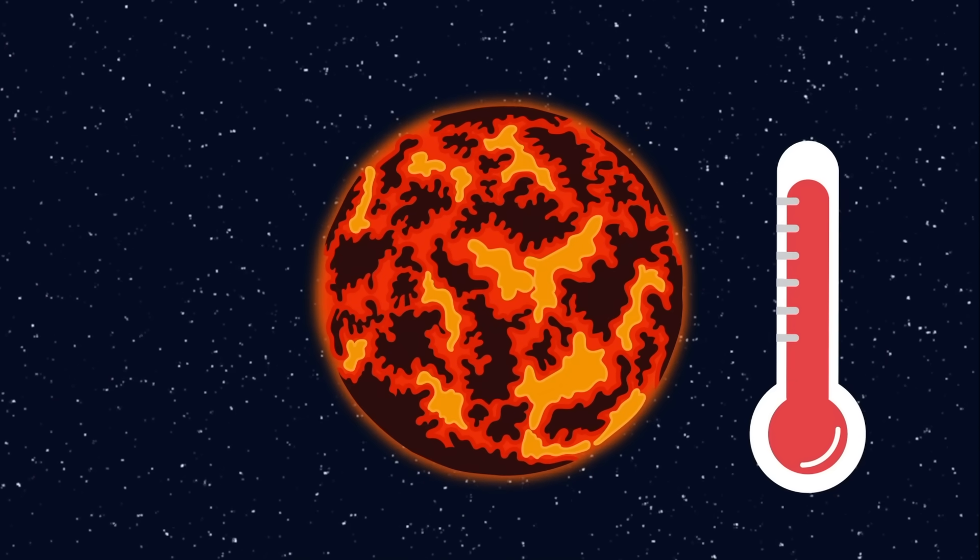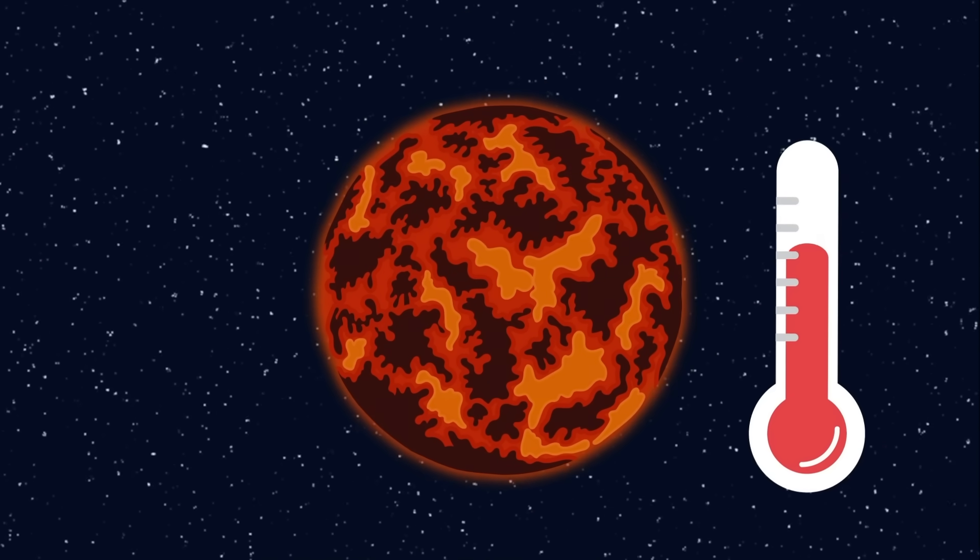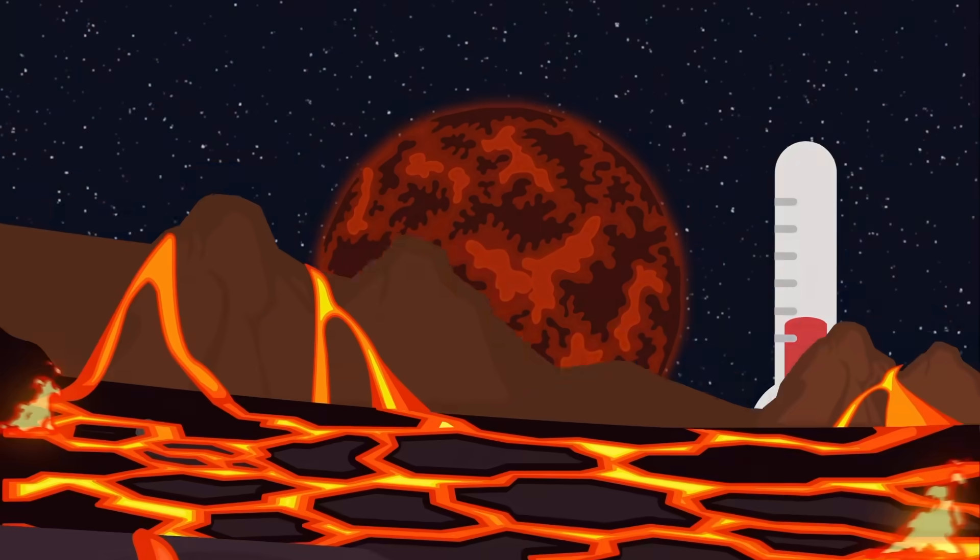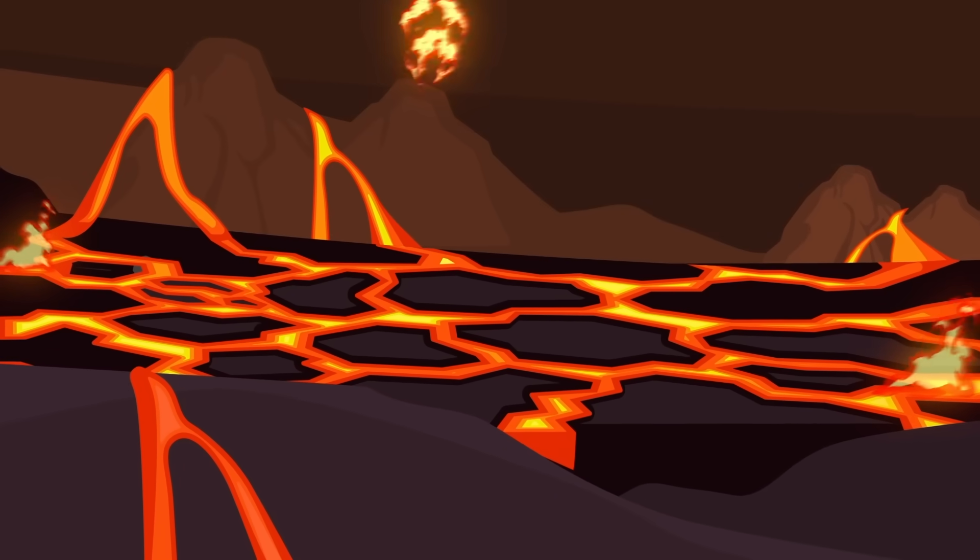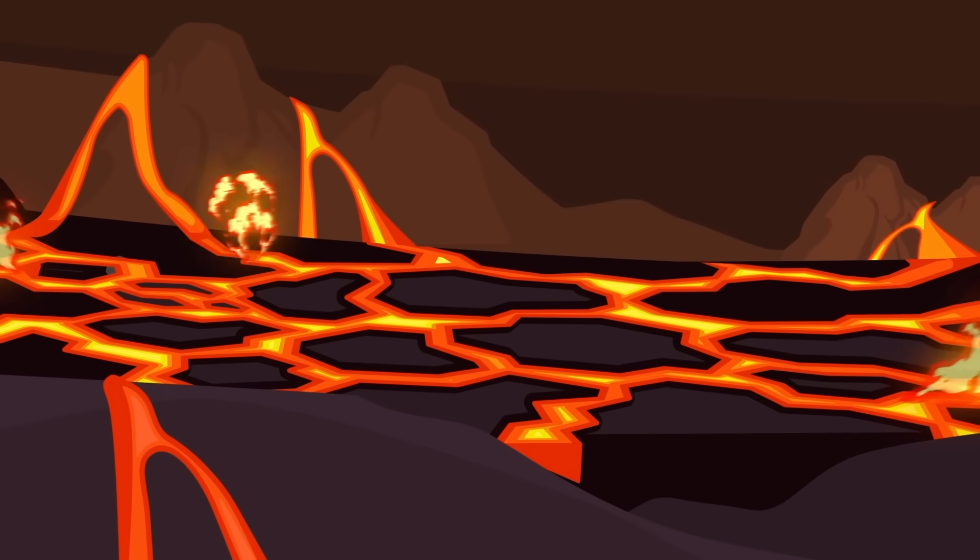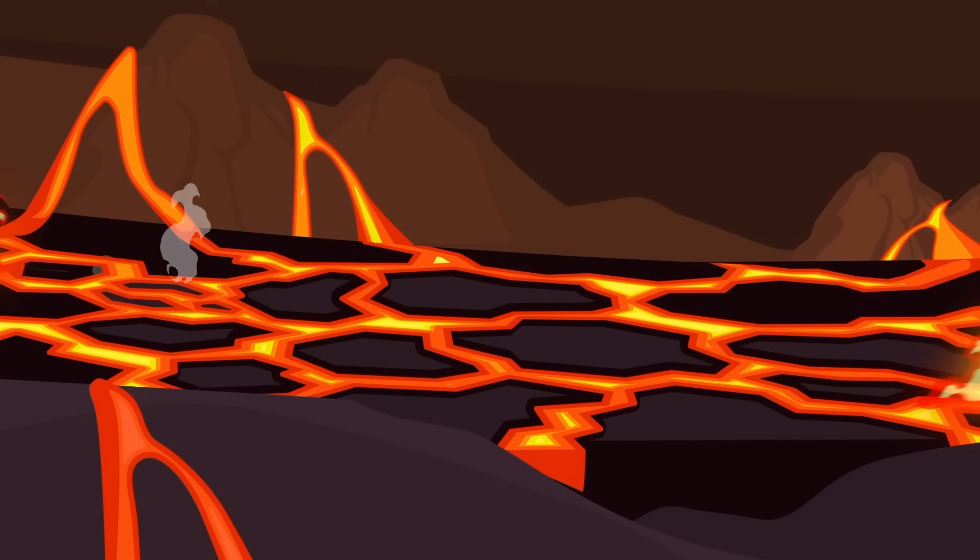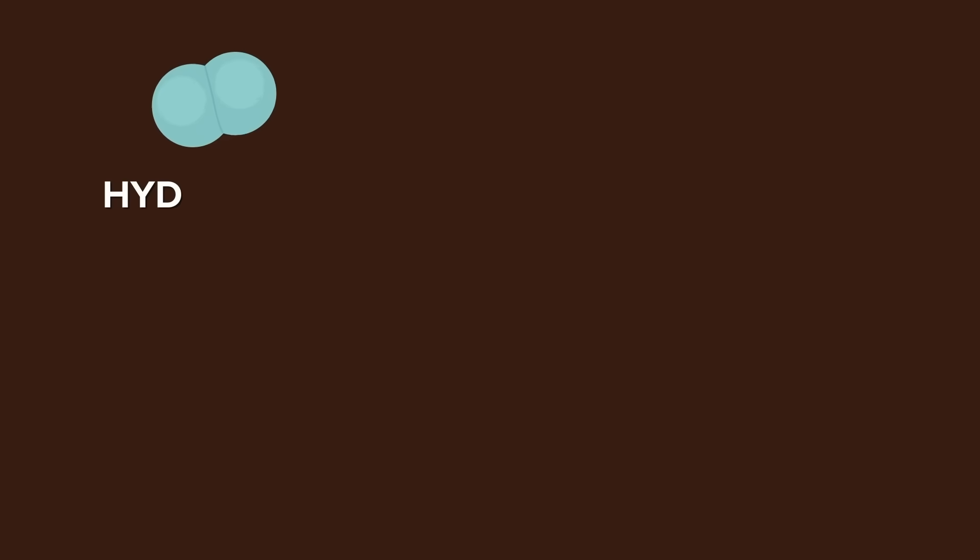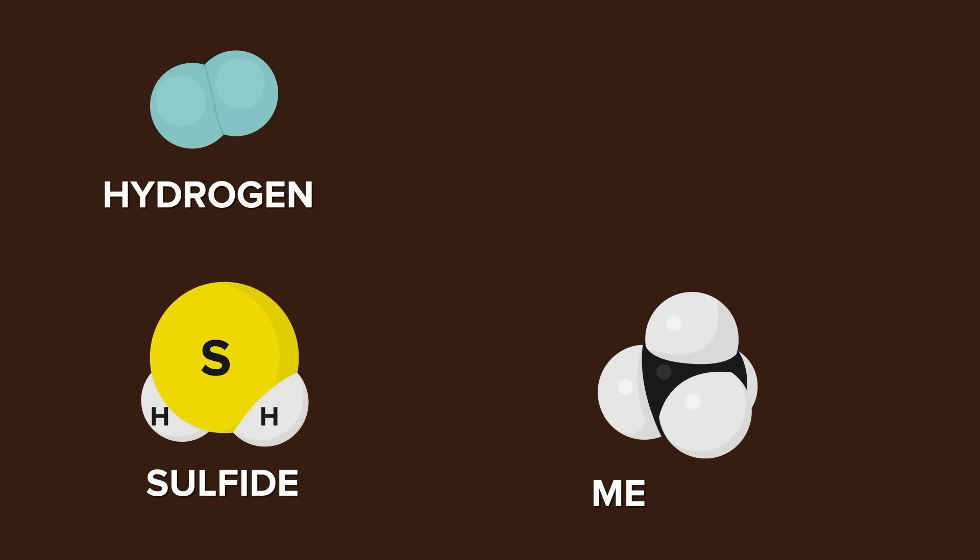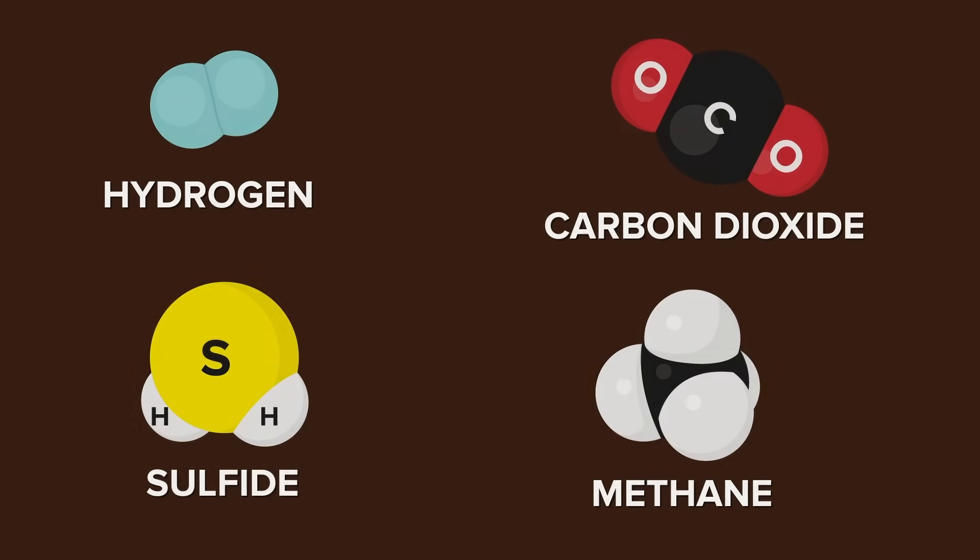It was around 4.6 billion years ago when Earth had formed into a pretty solid planet and was starting to cool. But the surface was still largely molten, and massive volcanoes were starting to form and spew gases into the atmosphere. They included hydrogen, but also sulfide, methane, and massive amounts of carbon dioxide.